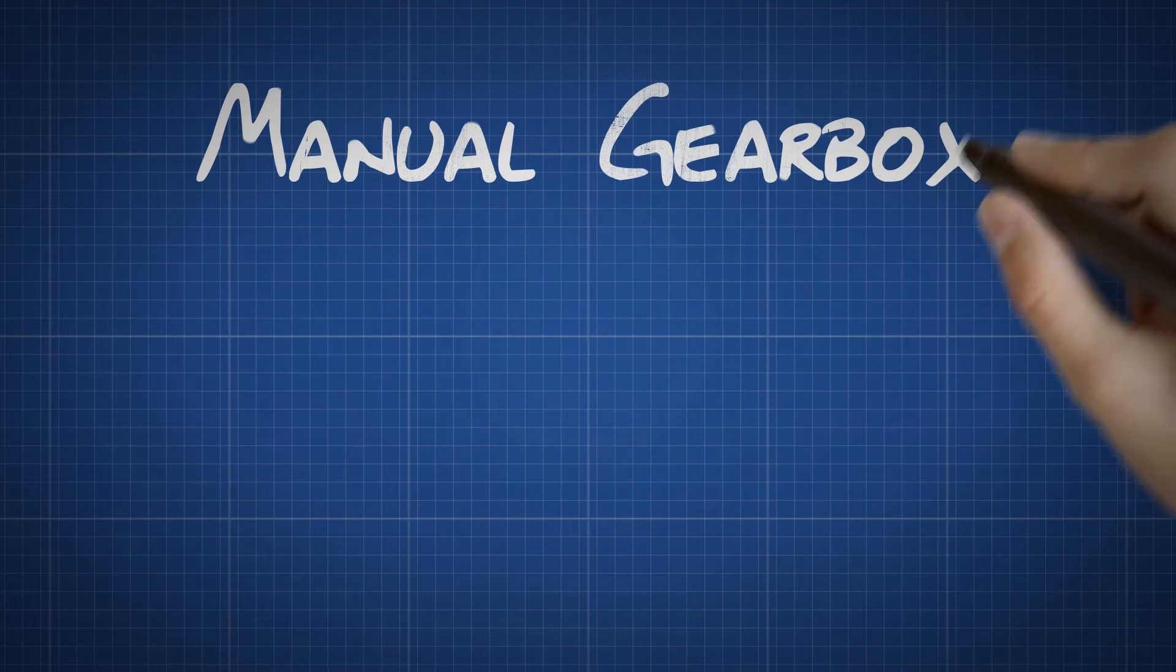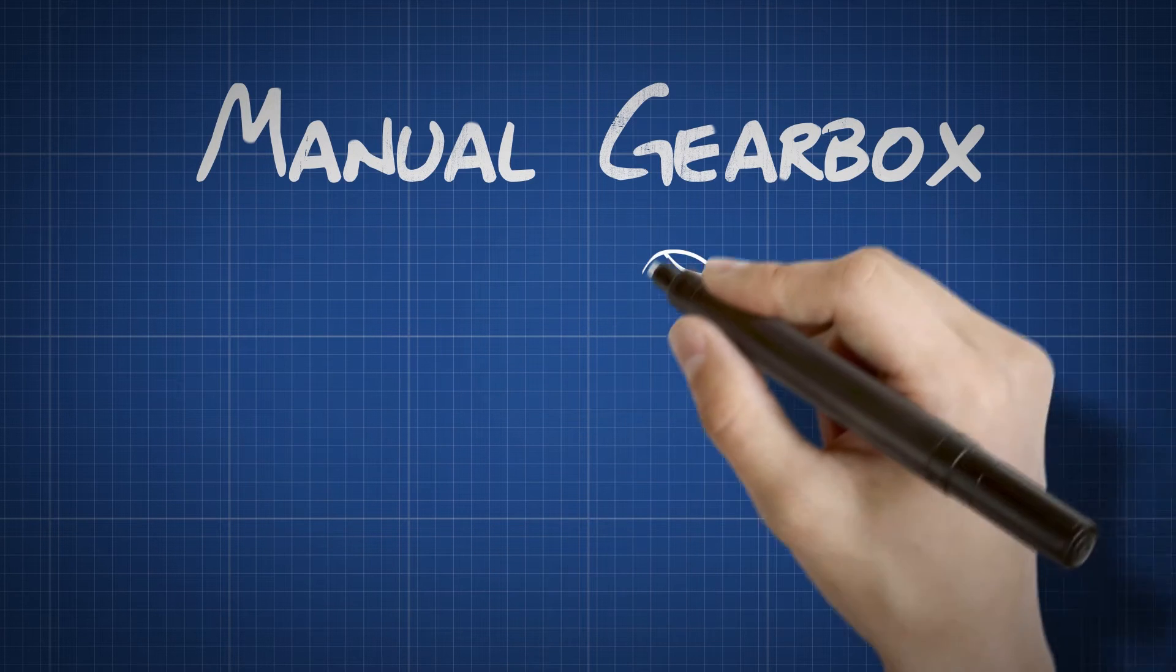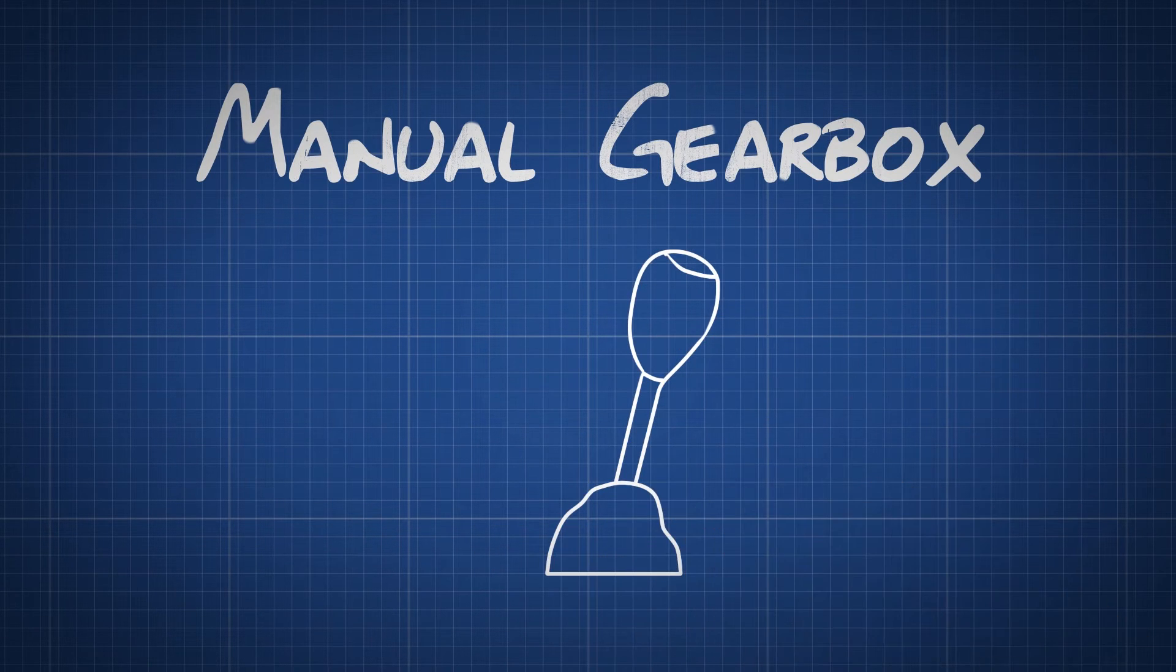How a manual gearbox works. In simple terms, a manual gearbox or manual transmission on a car is a set of gears that are selected by moving a gear stick.